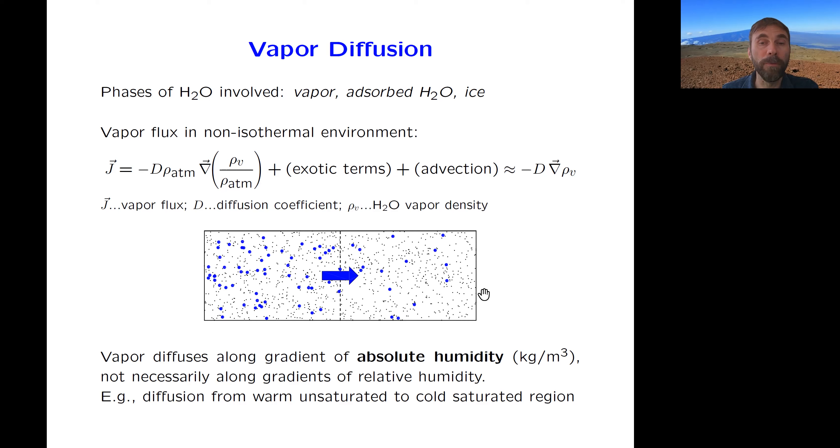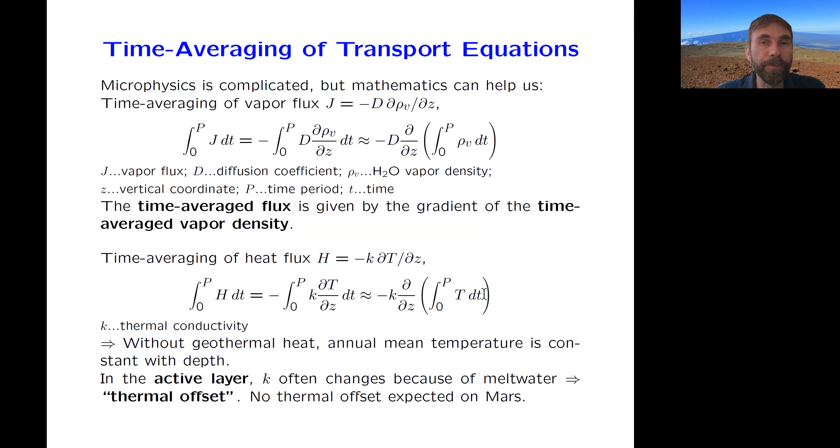And that can be a flux toward the already saturated region. And then we can time average these transport equations. And if the vapor diffusivity is not strongly correlated with the vapor density, then the time average just goes through. And the net flux, time averaged vapor flux, is given by the time averaged vapor density, which we in turn can determine from the time averaged vapor density on the surface and the time averaged vapor density of the ice table.